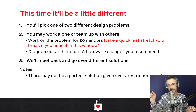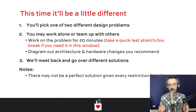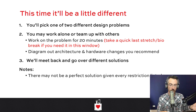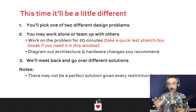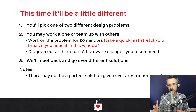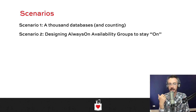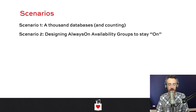What you're going to do is sketch out the architecture that you want — not only what kind of architecture, but what kind of hardware, and whether it's going to be virtualization or physical. We have two scenarios: first, a thousand databases and counting, and second, designing always-on availability groups to truly be always-on.